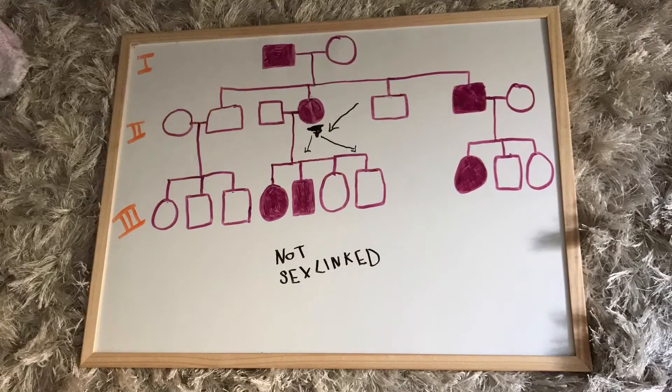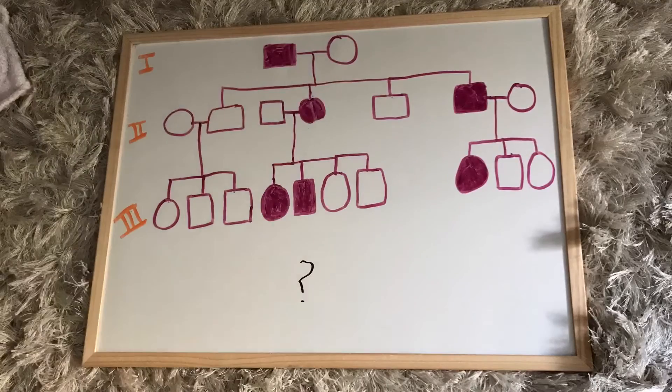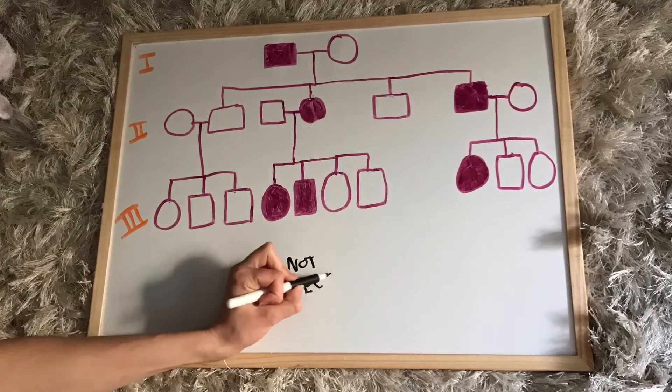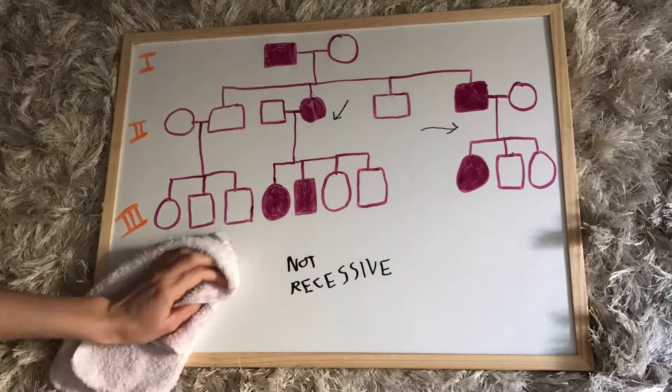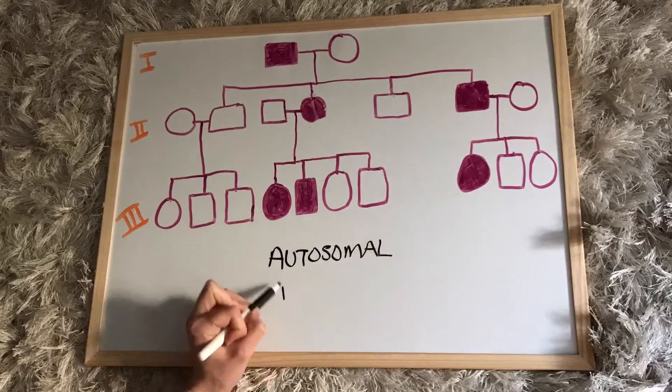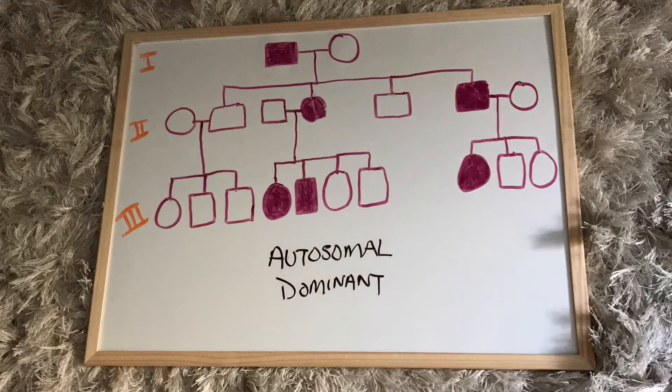So let's move on to autosomal recessive, which with the second family and the last family we see it can't be because when people marry in, we assume they're homozygous and in this case that doesn't work. So we know it's autosomal dominant and with that we can start filling in alleles.